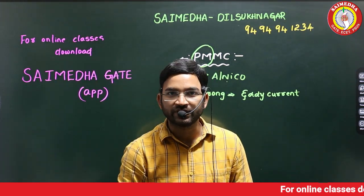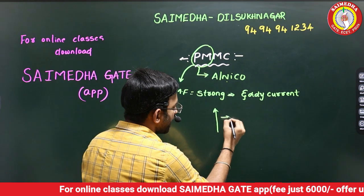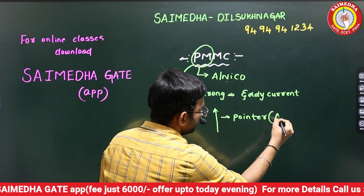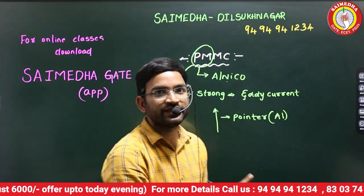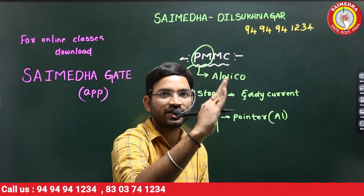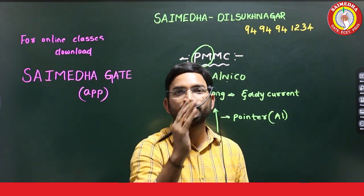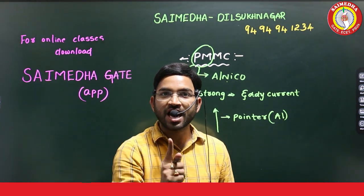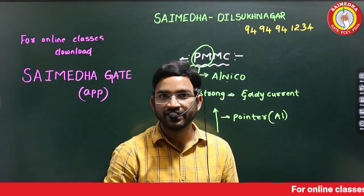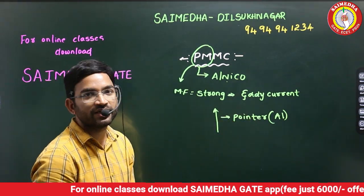What is a lightweight pointer? The pointer is made with aluminum - it is light in weight. When the pointer oscillates, recording the value becomes very difficult. So to reduce oscillations, we use eddy current damping methods.